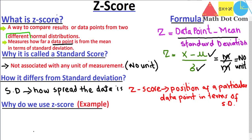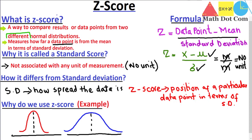So why do we use z-score? Let's use an example with two data sets. Here we have two diagrams: the first is for Class A — its distribution of marks — and the second belongs to Class B. The mean of both classes is 60, but the classes differ in their standard deviation. The standard deviation of Class A is σ = 5, and the standard deviation of Class B is σ = 20. This shows that Class B's data points are more spread out compared to Class A.